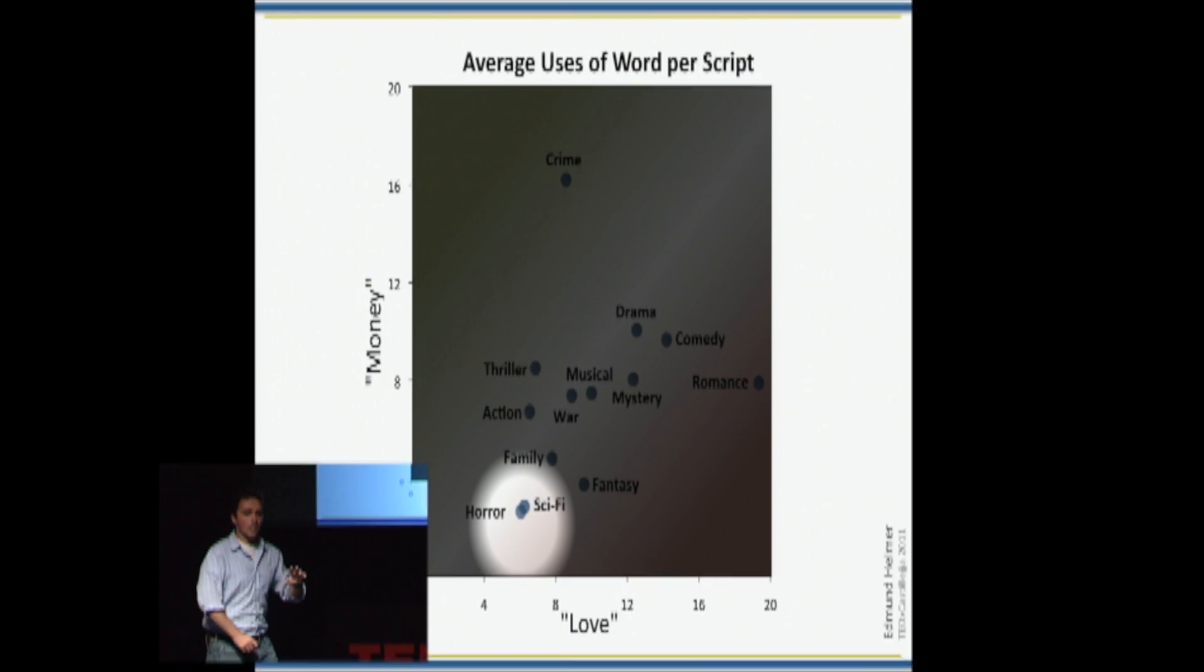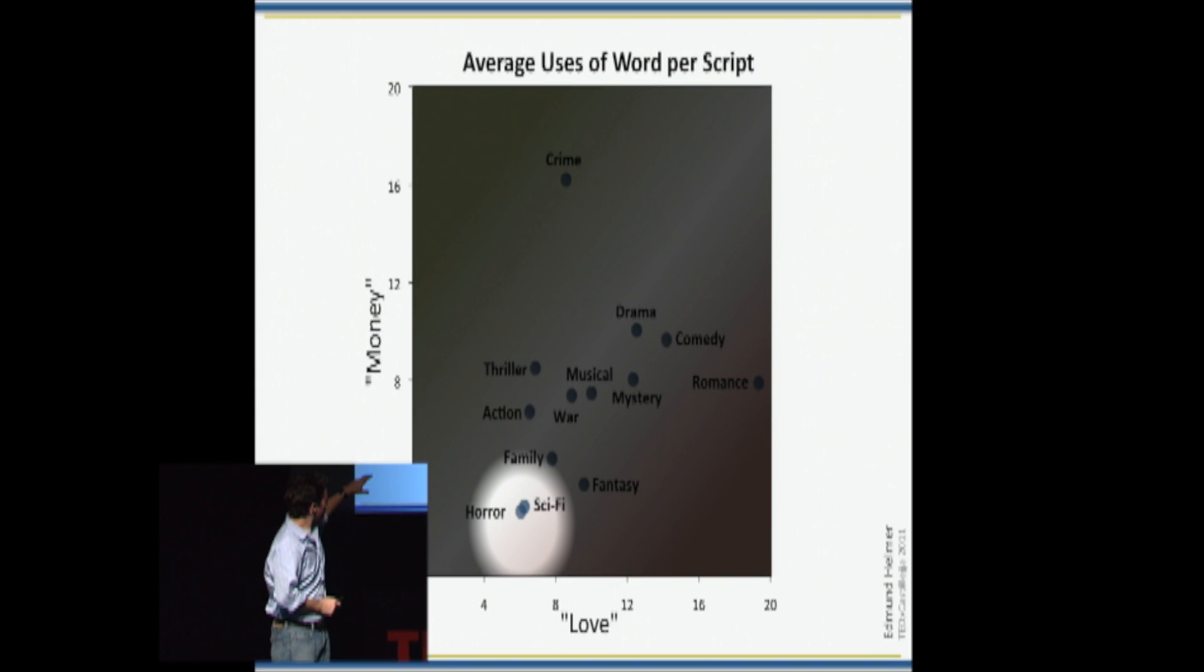And so here we have kind of abstract concepts of love and money, and genre in general, and yet here we have a quantifiable distance. So if someone said to you, I like horror movies, what else should I try? You'd be better off recommending sci-fi than you would romance. And so this is just the start of how Netflix works. It's only a piece, but it's actually kind of a big piece.